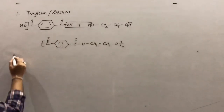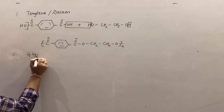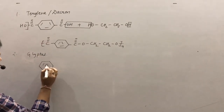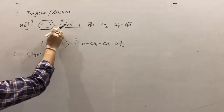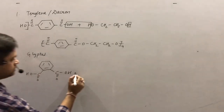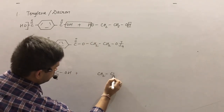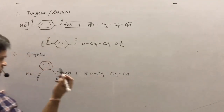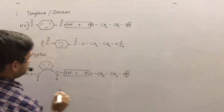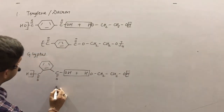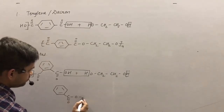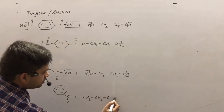The second polyester is Glyptol. The two monomeric units are phthalic acid, which is benzene-1,2-dicarboxylic acid — similar to terephthalic acid except it is the 1,2 isomer instead of 1,4 — and the second monomer is glycerol. You remove hydrogen from the alcoholic part and OH from the acidic part, leading to formation of Glyptol.